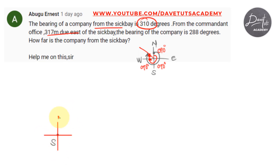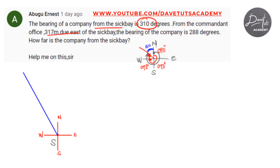So if we go to the Seat Bay and draw our four cardinal points — north, south, east, and west — then we start taking the bearing. We know that angles at a point total 360 degrees, so if we want to take it from the north toward the western direction, we can deduct 310 from 360, which leaves 50. So we can measure 50 degrees from the north. That angle drawn is the bearing of the company from the Seat Bay — 310 degrees from the north to the inclination of the company from the Seat Bay.